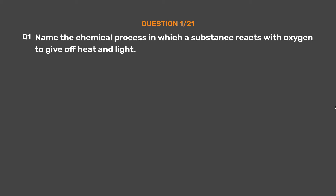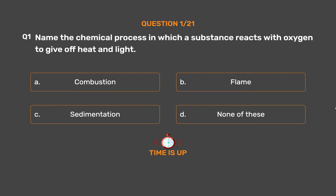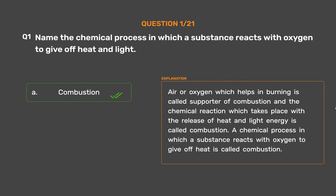Question number 1: Name the chemical process in which a substance reacts with oxygen to give off heat and light. Option A: Combustion. Option B: Flame. Option C: Sedimentation. Option D: None of these. The correct answer is Option A: Combustion. Air or oxygen which helps in burning is called supporter of combustion, and the chemical reaction which takes place with the release of heat and light energy is called combustion.